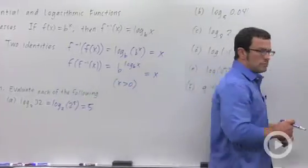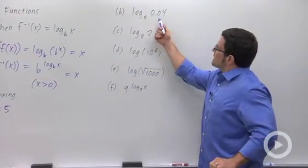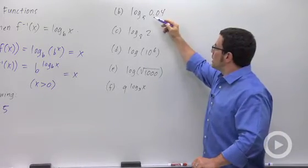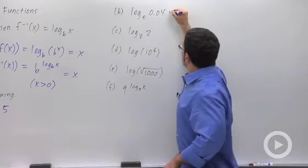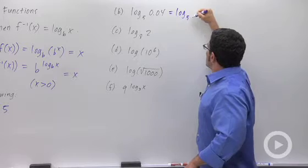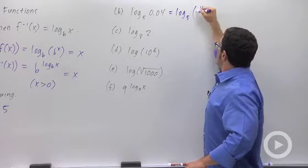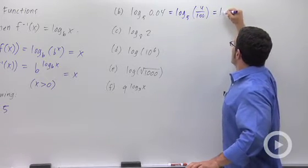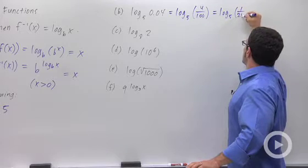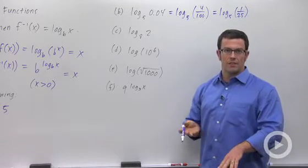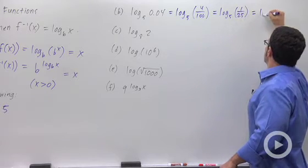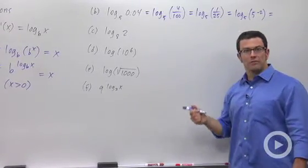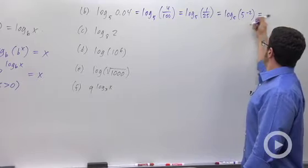Here's another one. Log base 5 of 0.004. Now here I've kind of disguised it a little bit, but 0.004 is going to be a power of 5. It's the same as 4 over 100, which is the same as 1 over 25. And 1 over 25 is 5 to the negative 2. And again, by the first identity, log base 5 of 5 to the negative 2 is just negative 2.